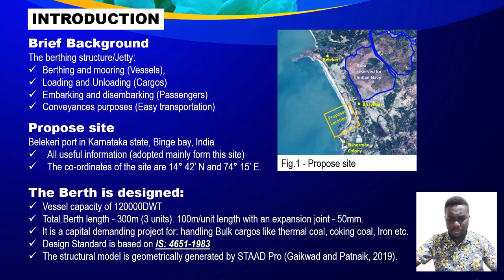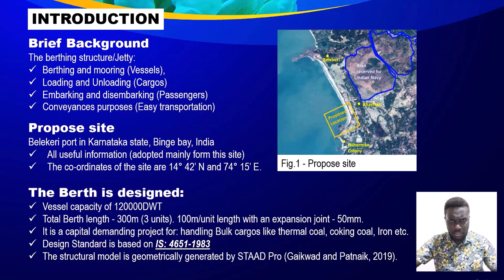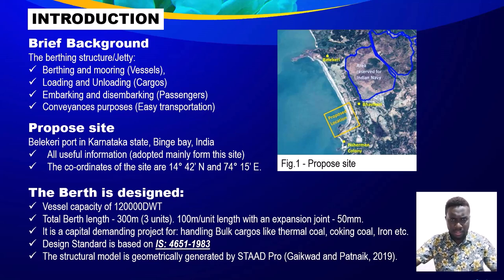For the proposed site, the berthing structure is proposed for Bellike Report, as you can see it in Karwar in Karnataka state at Pinjem Bay in India. It has the coordinates of 14 degrees 42 minutes north, 74 degrees and 15 minutes easting. The berth is designed to cater for vessels with a capacity up to 120,000 dead weight tons. It has a berth length of 300 meters, which is divided into two units, each unit having 100 meters per unit length with an expansion joint of 50 mm.